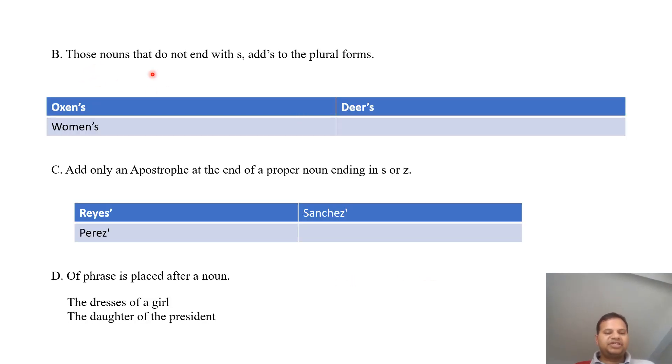Those nouns that do not end with s add apostrophe s to the plural form. For example, oxen's, deer's, then women's.